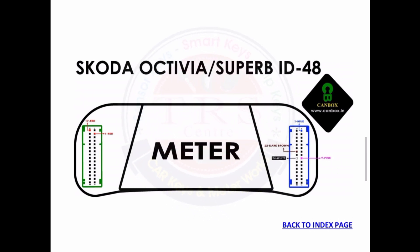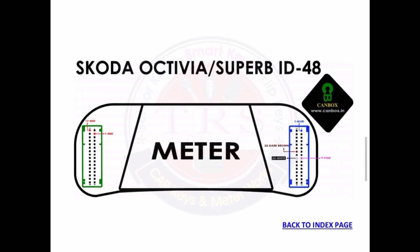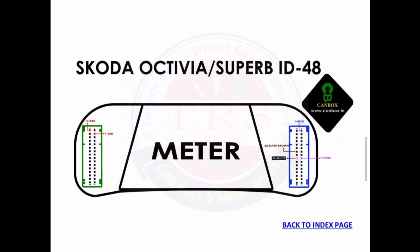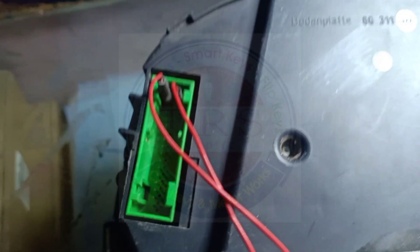With the help of this CAN diagram we can do recalibration via OBD. This is also the CAN connection diagram used for key programming. This is the wiring diagram.